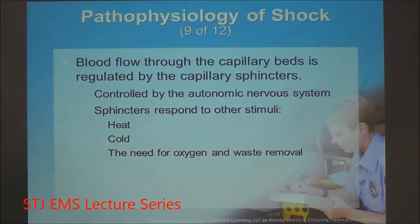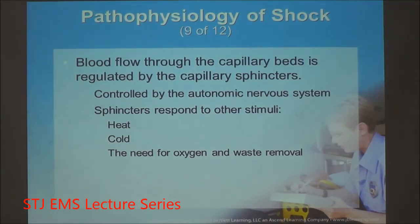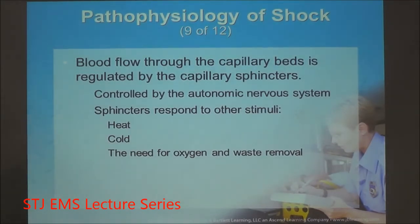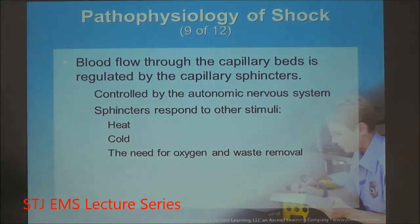You're too busy with daily activities to consciously manage your blood pressure, so you rely on your involuntary autonomic nervous system. The autonomic nervous system is broken down into sympathetic — fight or flight — and parasympathetic — feed or breed. Through these two processes, the body can regulate blood pressure to accommodate internal issues and external forces.